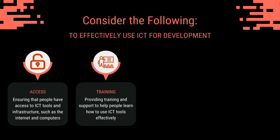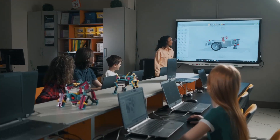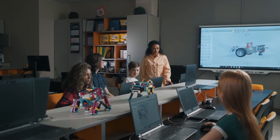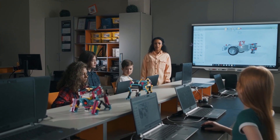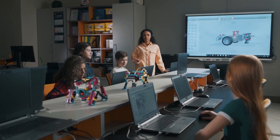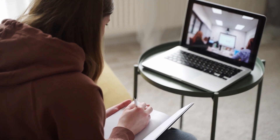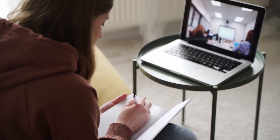Training and support: providing training and support to help people learn how to use ICT tools effectively can help to ensure that they are able to take full advantage of the opportunities that ICT offers for development. Offering workshops, classes, or online tutorials that teach the basics of using different ICT tools is one way to do this. These sessions can be tailored to the specific needs and skill levels of the participants, and can cover topics such as how to use a computer, how to access and use different software applications, and how to navigate the internet.